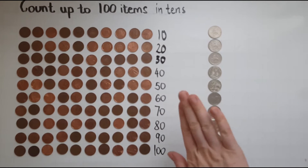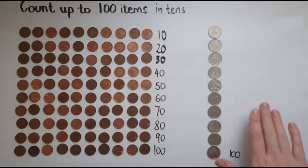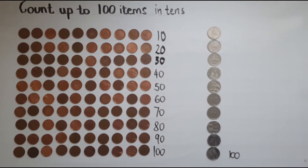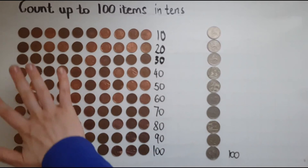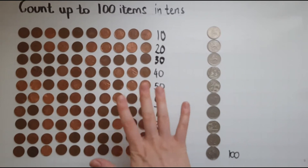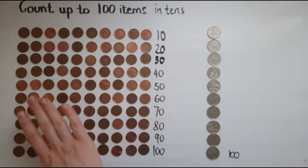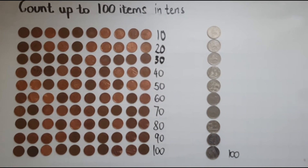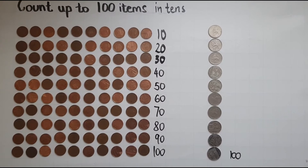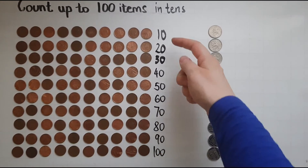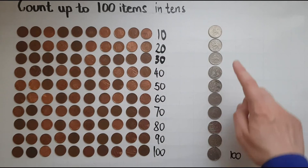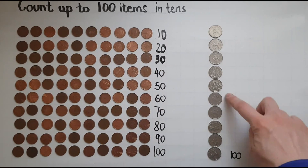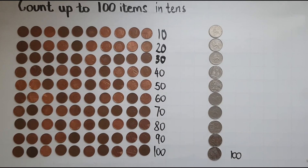So the coins that I have on the right have the same value as all these coins that I have on the left. So we should be able to count them in 1s, to count them in 10s, in rows of 10 or 10p coins at a time.